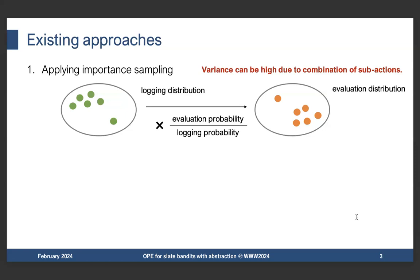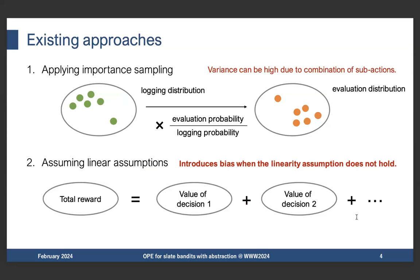To deal with this variance issue and avoid the combinatorial action space, another direction is to apply a linearity assumption on the reward, assuming that the total reward is linearly decomposable into the value of each sub-action, such as the value of a key visual or slogan. However, since this assumes a restrictive assumption, this approach introduces bias when the linearity assumption does not hold, and it is very hard to verify if the assumption really holds in real-world applications.